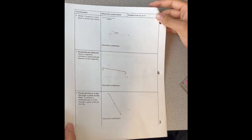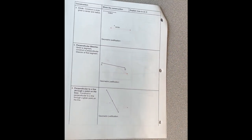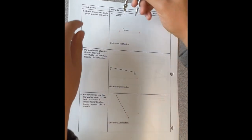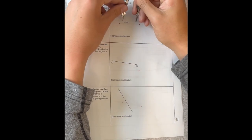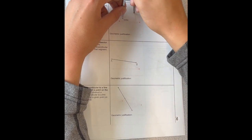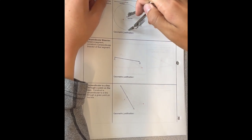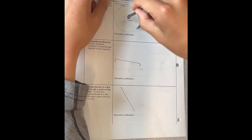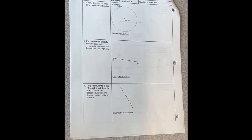Moving on to something probably much more simple, we'll just be constructing a circle of a given radius. All you need is your compass. Set your compass equal to the given radius, put the needle end of your compass on the center of the circle, and just move your compass all the way around. And you've drawn a circle of a given radius. That simply works by just the definition of the circle.